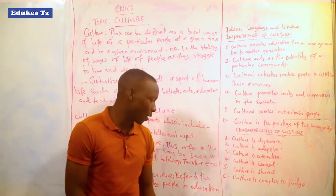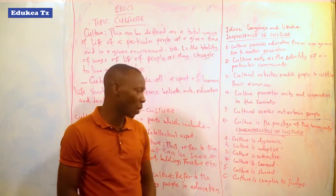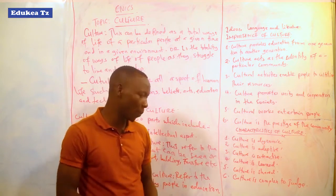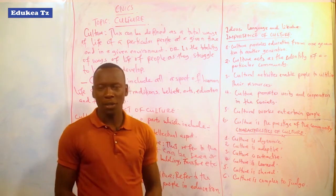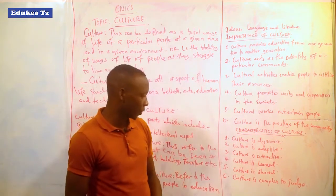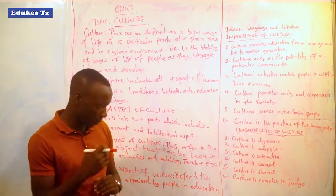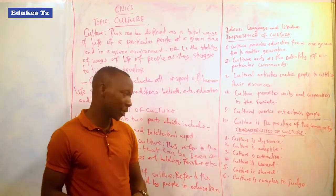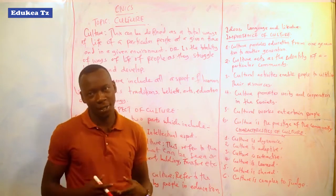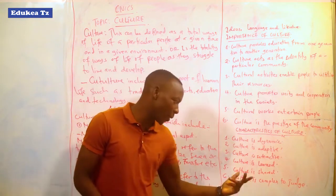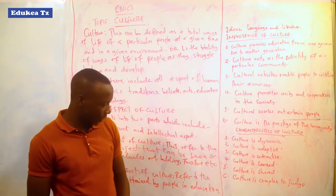Point number four: culture is learned. As we are learning here, you may find that you did not know your culture before, but according to learning and interaction with people from one place to another, you find that you have really caught on. Point number five: culture is shared. You share culture as you meet with your friends and people from different areas. Culture is shared when people from different areas come into contact, and as they share their ideas, each person has their own culture but through interaction you share your culture.